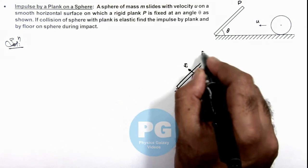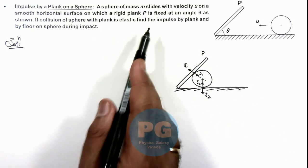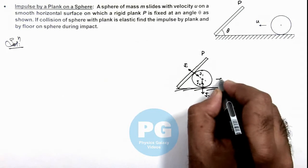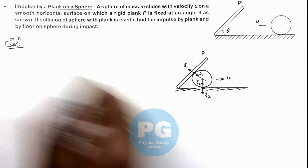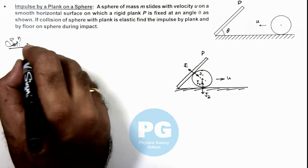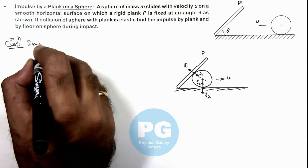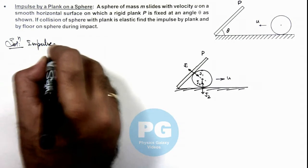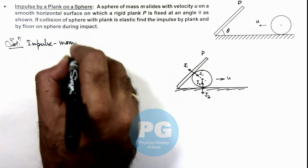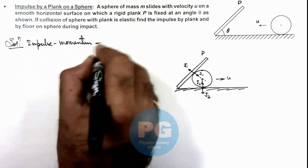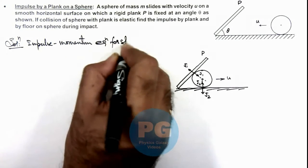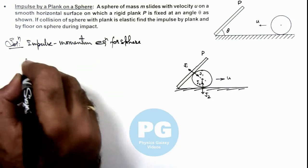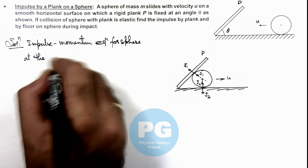Since the collision is elastic, the sphere will rebound back with the same velocity u. Now we can write the impulse-momentum equation for the sphere at the point of collision.